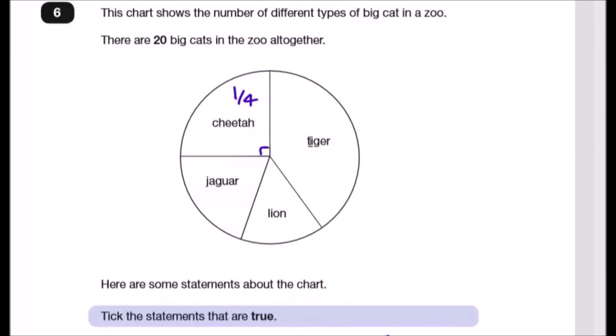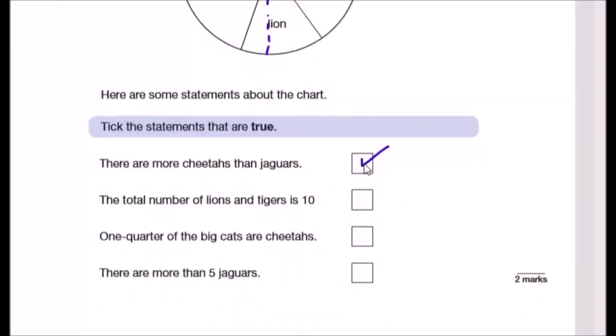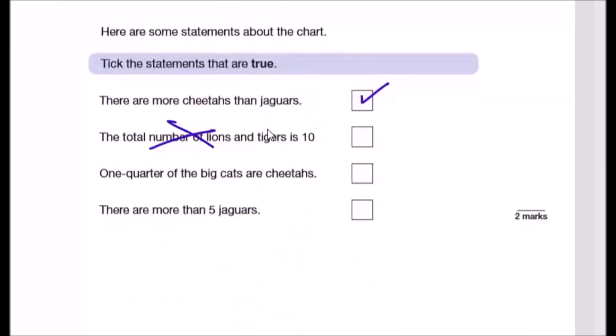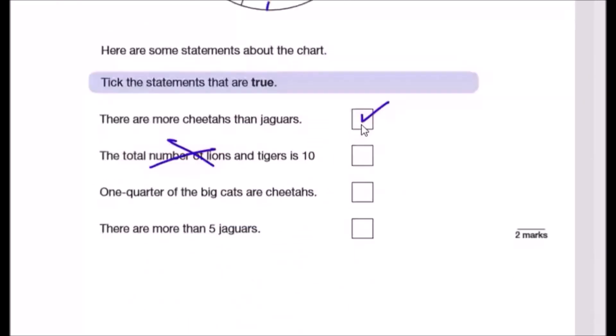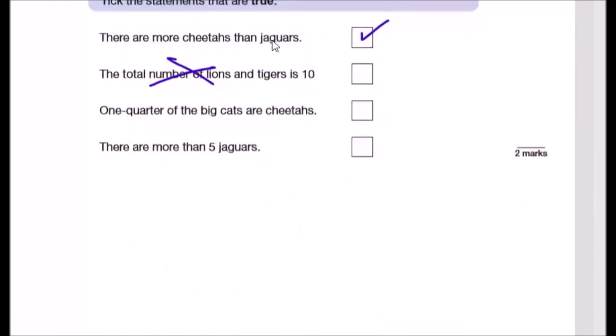So how do we know that? Tigers plus lions. If you want to get 10 in a pie chart, it should be a line kind of straight through the middle. If the line was a bit like this, then these two combined would make 10. But actually there's a bit more, maybe 11 or 12, so this is false. One quarter of the big cats are cheetahs. Yep, we saw that.